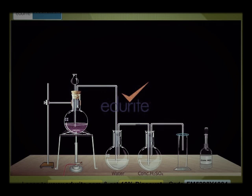Add a few drops of concentrated hydrochloric acid to the potassium permanganate solution through the thistle funnel. Observe the reactions that take place.